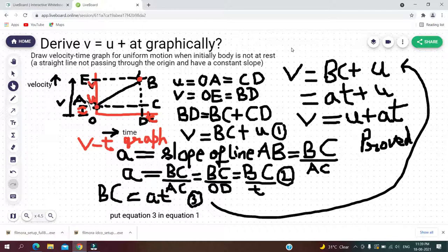Here v denotes the final velocity, u denotes the initial velocity, a denotes the acceleration, and t denotes the time.